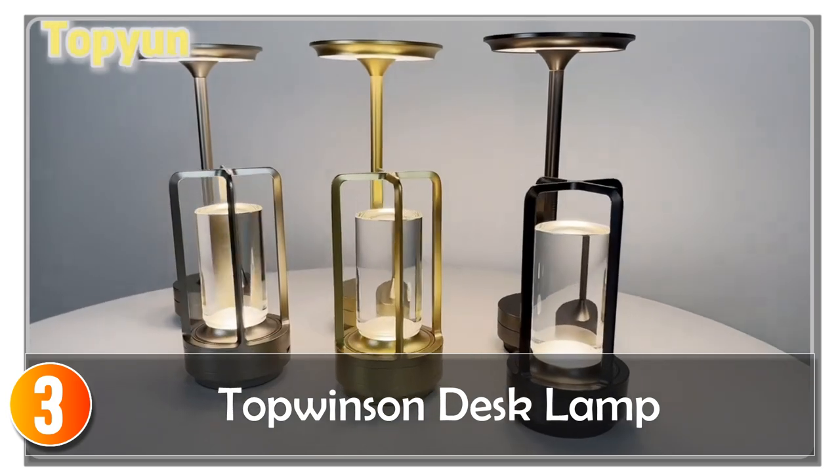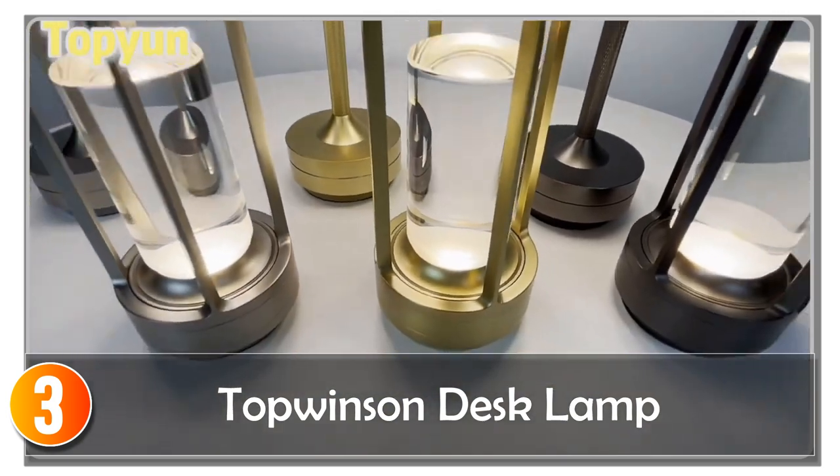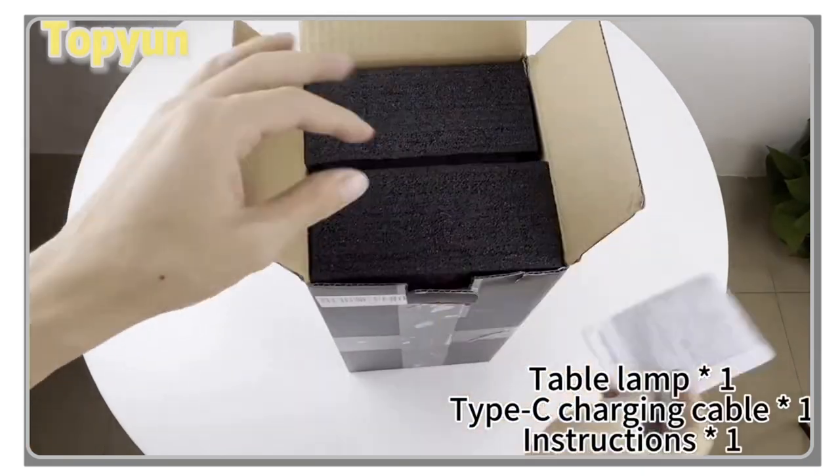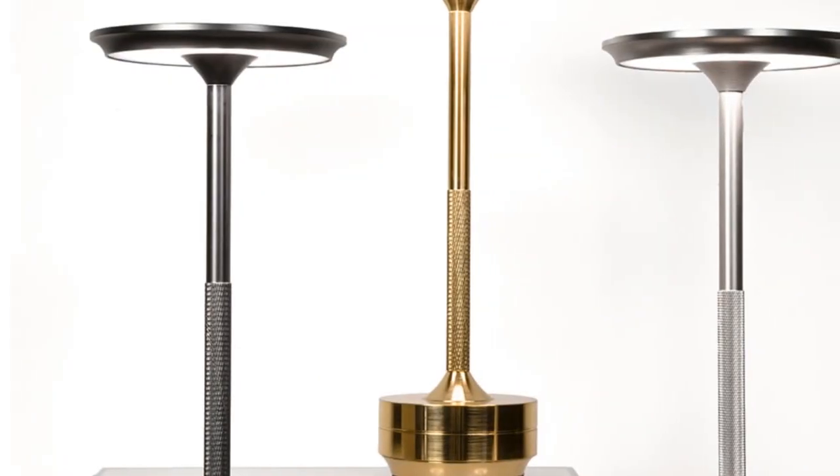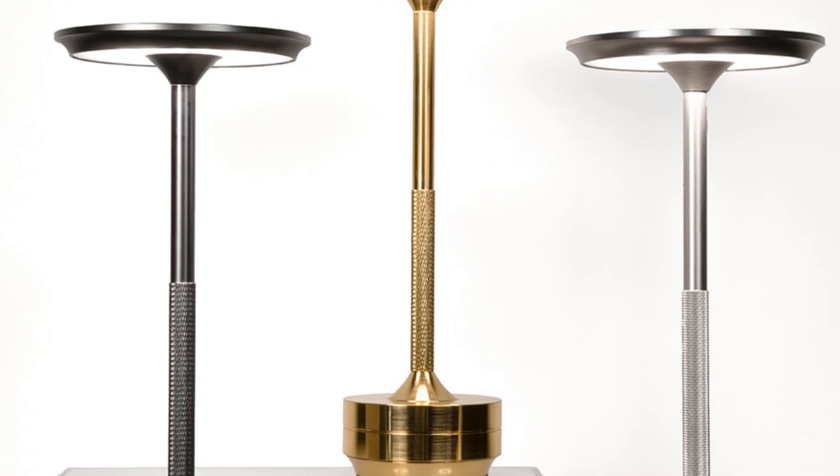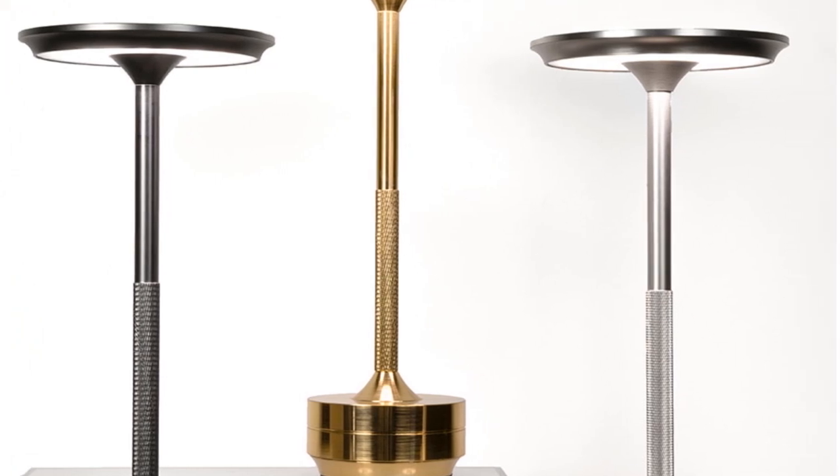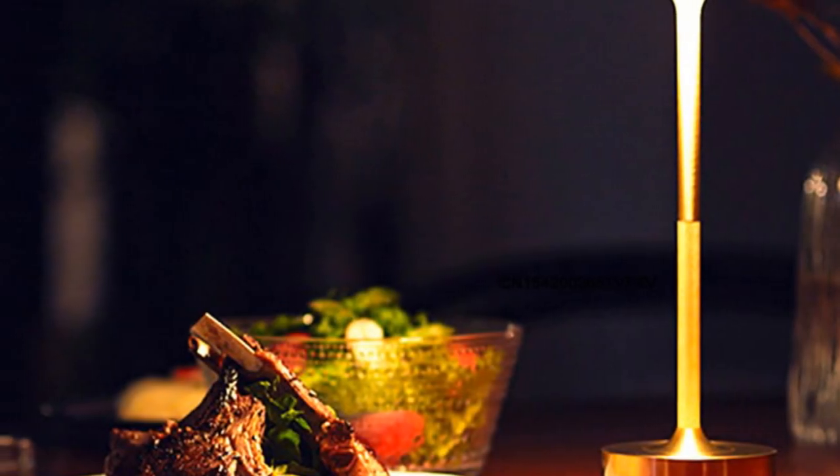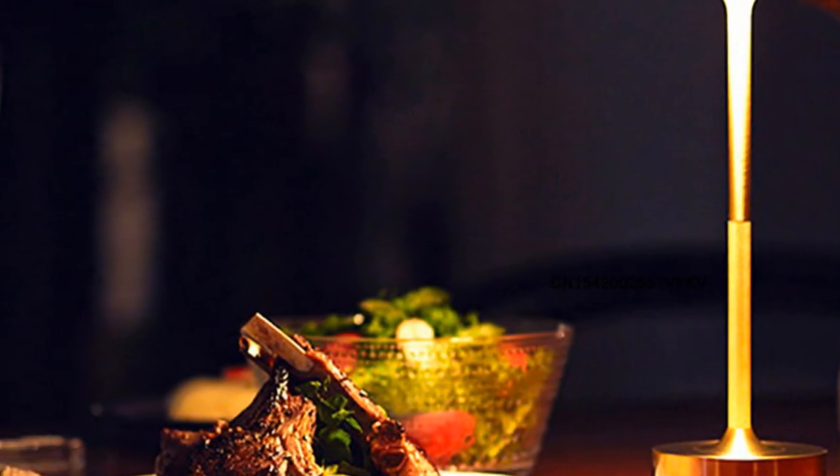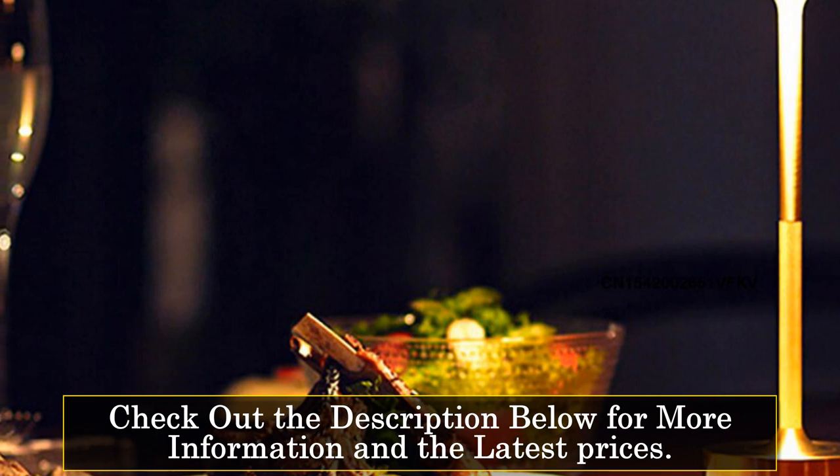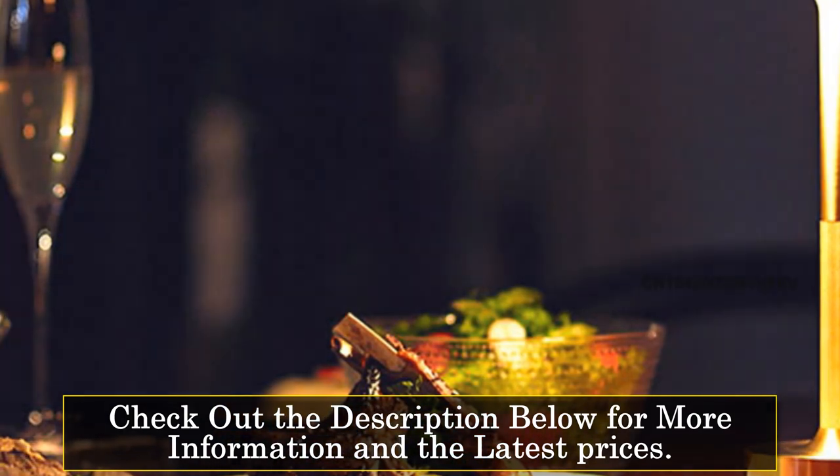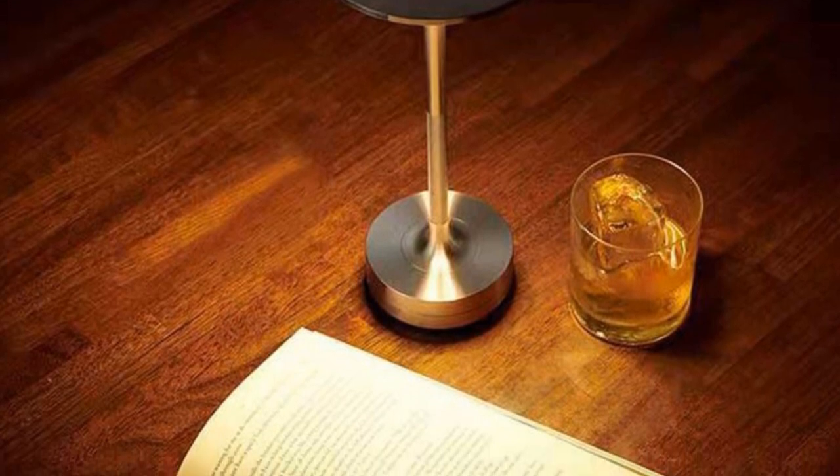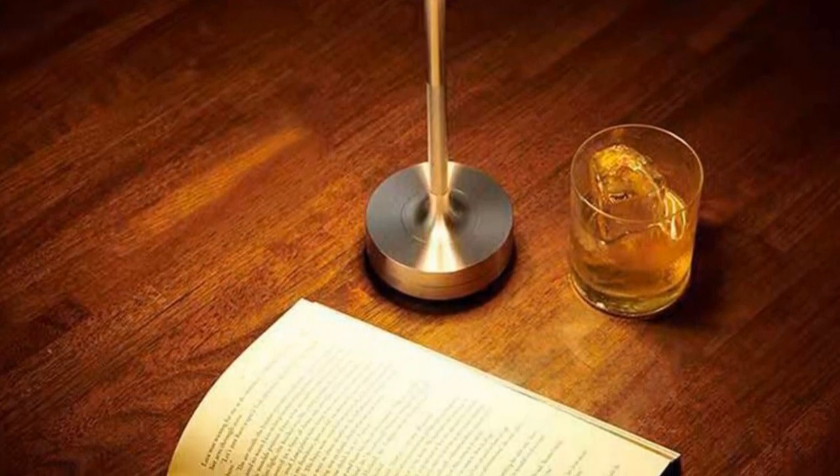At number 3, the Topwinson desk lamp is a retro-inspired lighting accessory that combines functionality with a touch of elegance. This portable and dimmable desk lamp is ideal for use in restaurants, bars, or as an atmospheric addition to your home decor. Made from high-quality aluminum, the Topwinson desk lamp boasts a sleek black finish that exudes a retro vibe. Its crystal shade and plated techniques further enhance its visual appeal. The lamp features a touch on/off switch, allowing for convenient and easy operation.